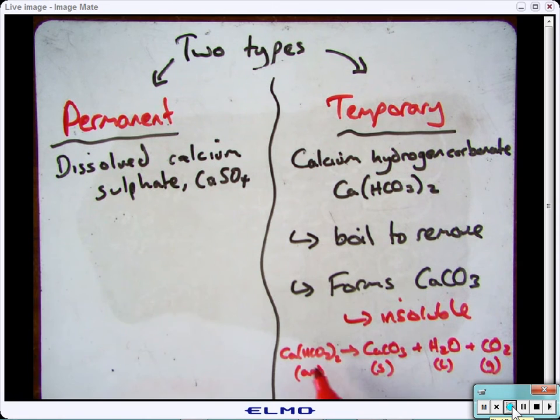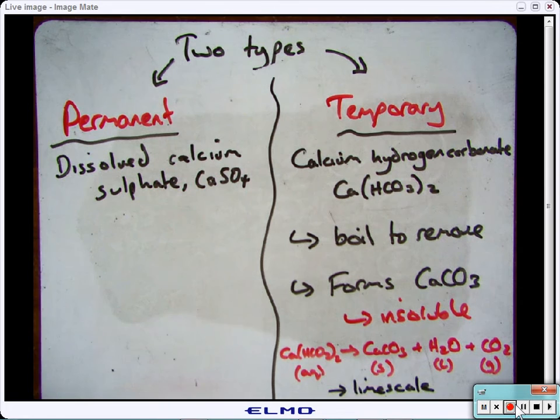The calcium hydrogen carbonate, when boiled, turns into calcium carbonate which is a solid, water, and carbon dioxide which is a gas and is easily removed. This takes the form of the lime scale you see in your kettle.